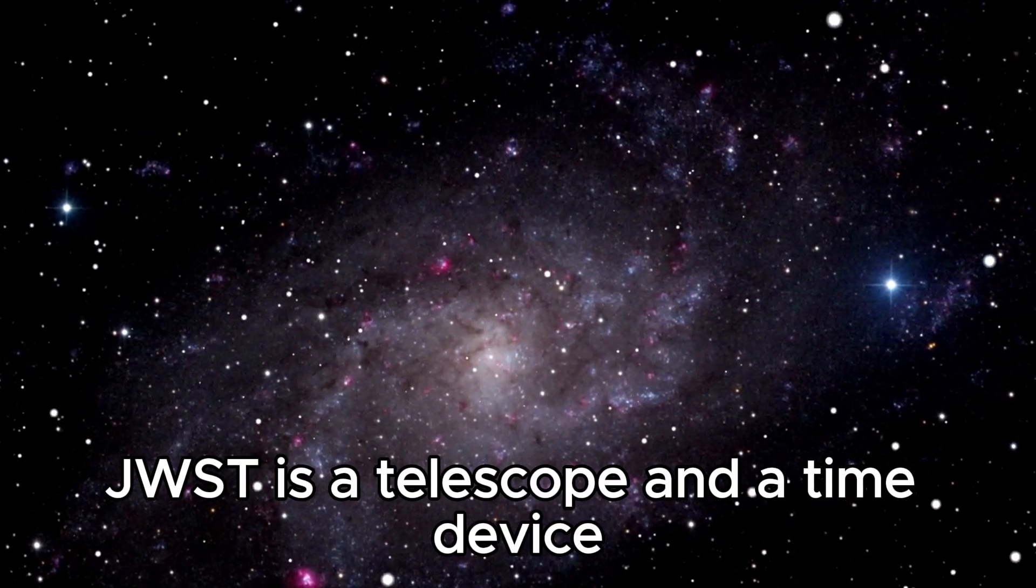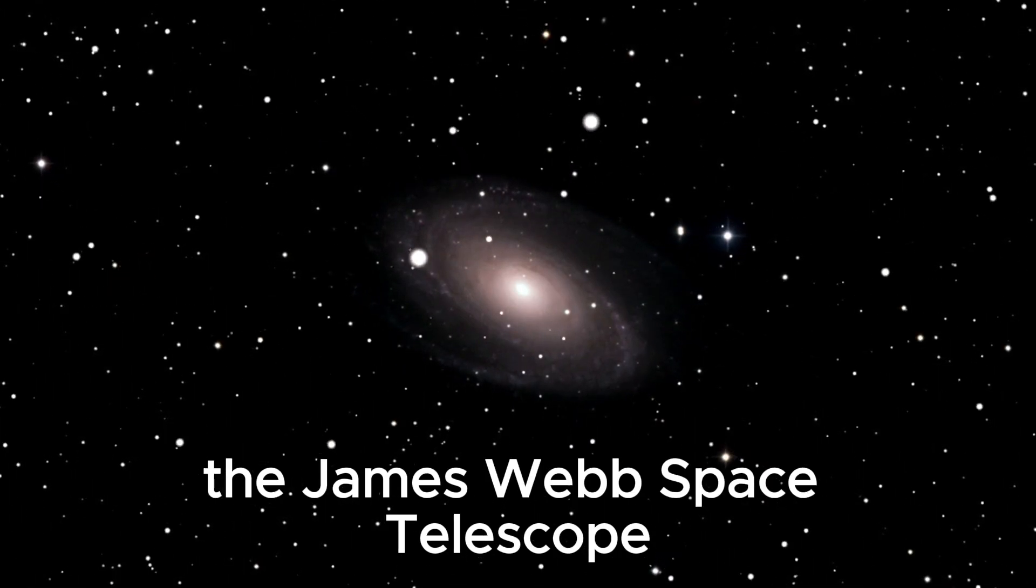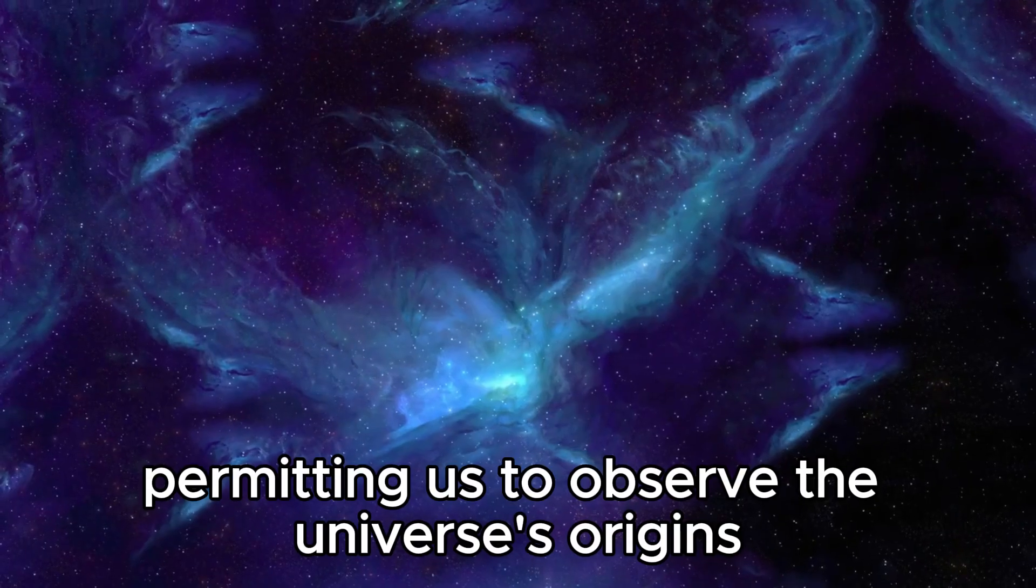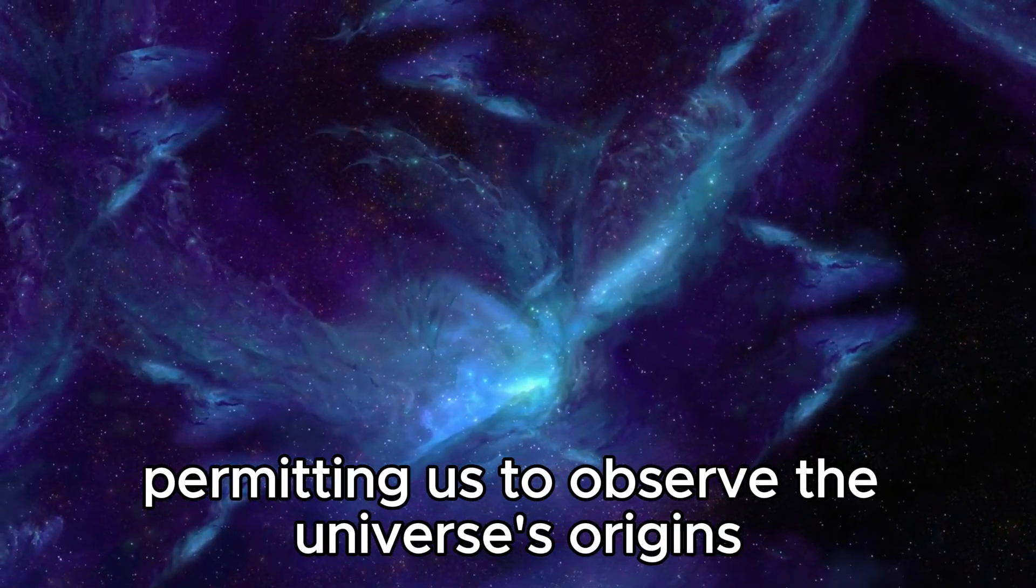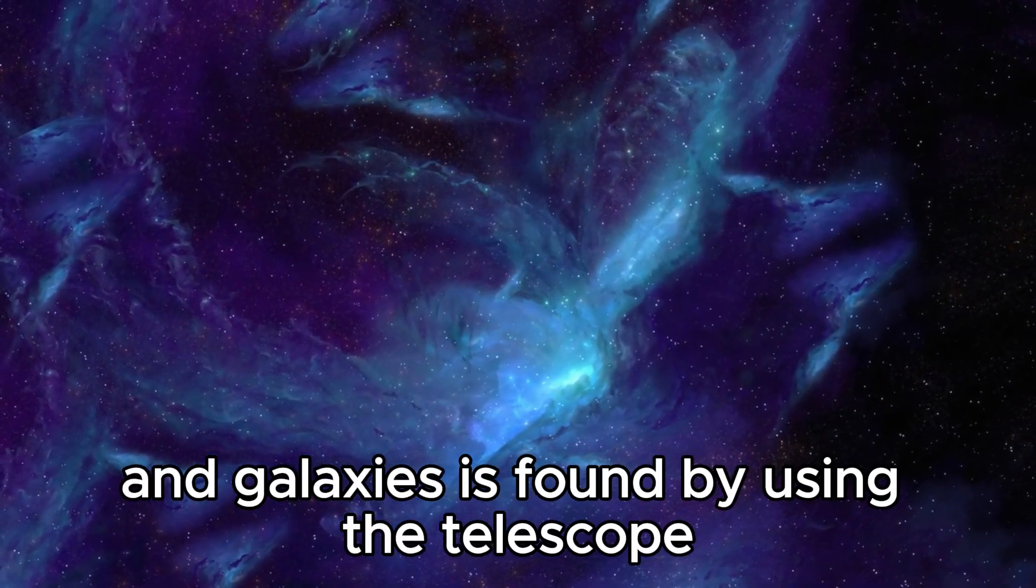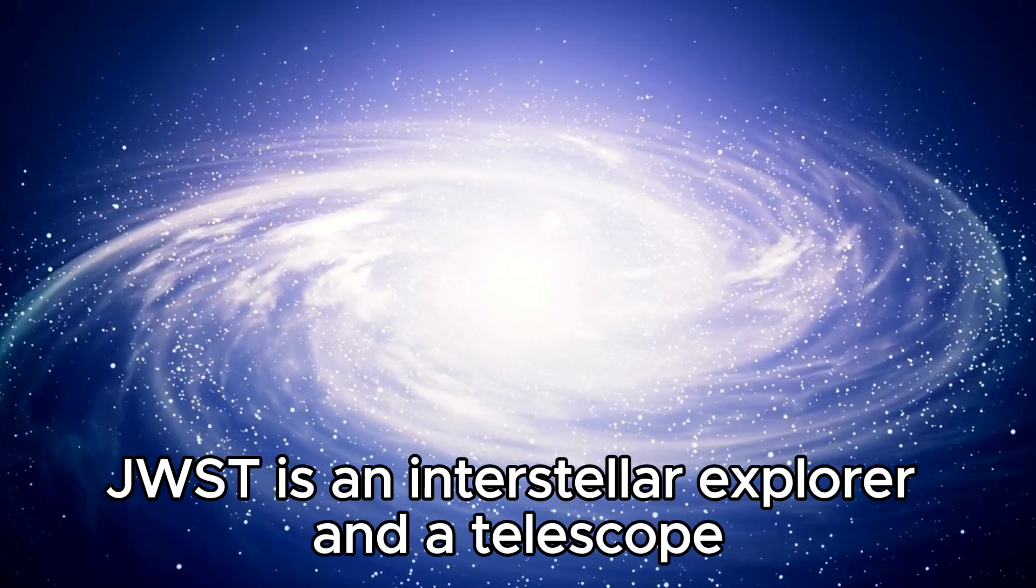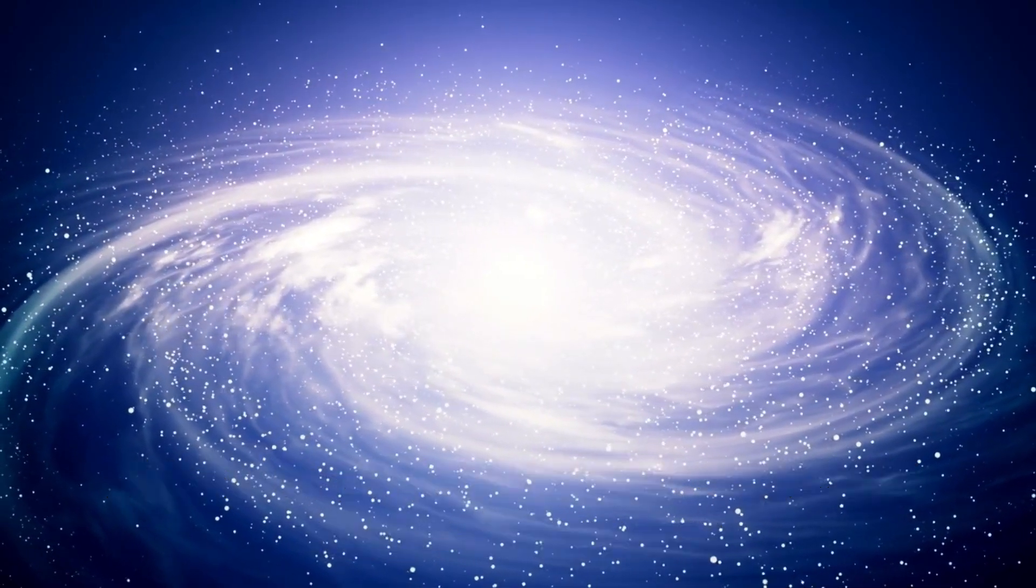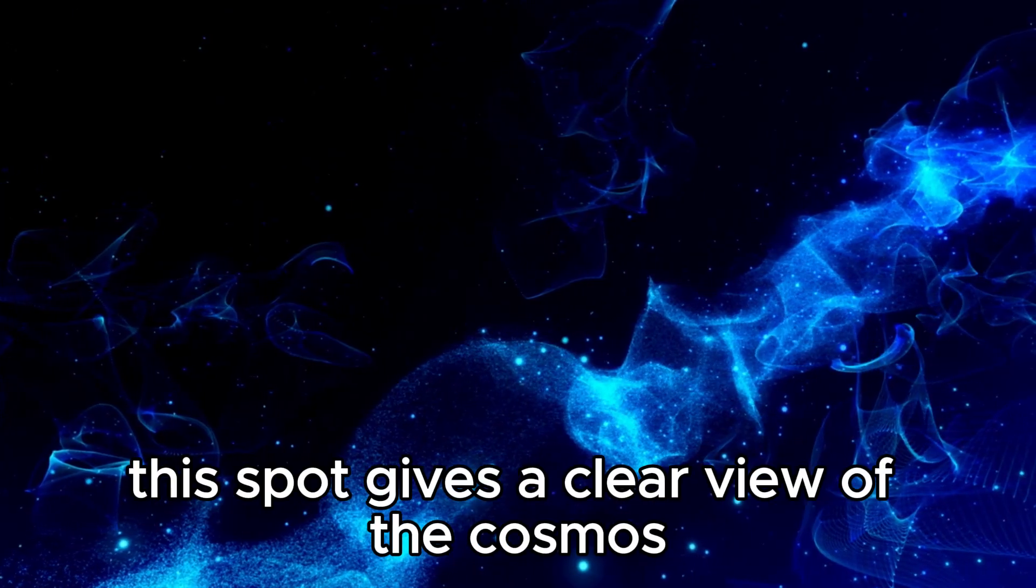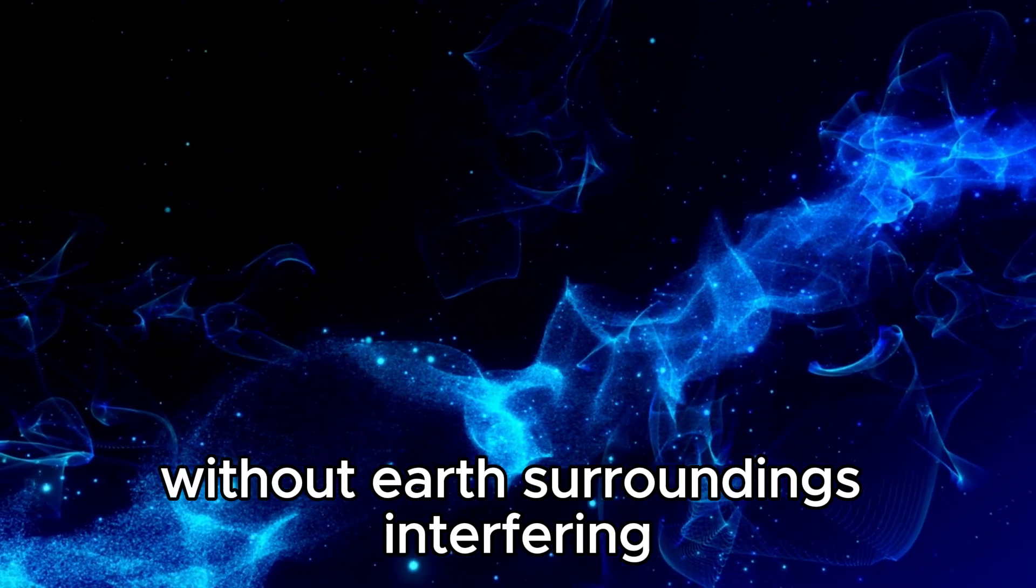JWST is a telescope and a time machine. It can discover light that has traveled across the cosmos for billions of years, allowing us to observe the universe's origins. Light from ancient celestial bodies and galaxies is found by the telescope. JWST is an interstellar explorer and a telescope. It circles the sun at L2, the second Lagrange point. This spot gives a clear view of the cosmos without Earth's atmosphere interfering.